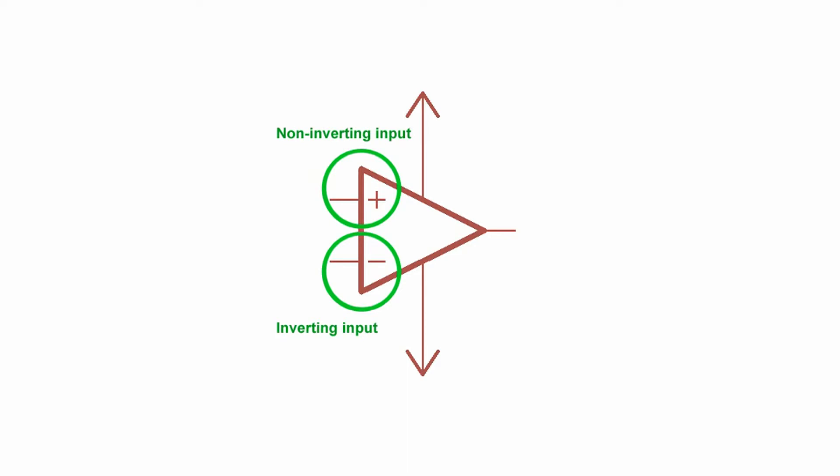The plus and minus pins are the inverting and non-inverting inputs of the op-amp. Don't worry too much about what that means for now. Just realize that these are not the power supply pins. They are your signal inputs.